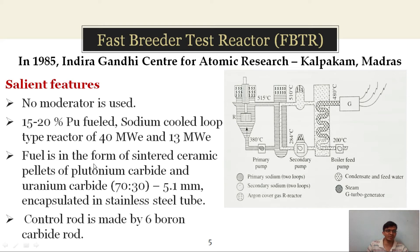The fuel is in the form of sintered ceramic pellets of plutonium carbide and uranium carbide in a proportion of 70% to 30%, having a dimension of 5.1 millimeters, encapsulated in a stainless steel tube — stainless steel is used as the cladding material. This reactor contains 61 fuel pins forming a sub-assembly. The core is surrounded by a sub-assembly of fertile material, either uranium or thorium. The core blanket and reflector are covered by a stainless steel vessel of 3.2 meter diameter and 8.7 meter height to provide thermal and neutron shielding.